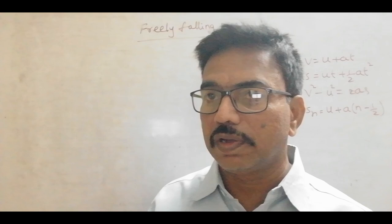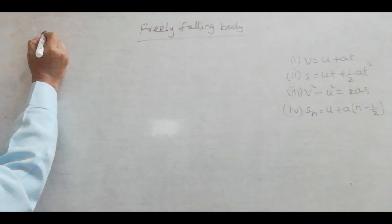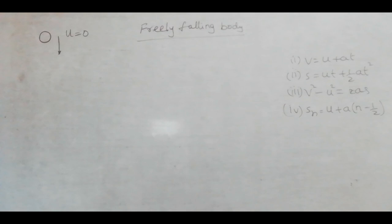Now coming to a Freely Falling Body. A Freely Falling Body is that which is dropped from some height. Suppose this is a body which is dropped from some height, then its initial velocity U is equal to 0. Suppose this is the ground level.